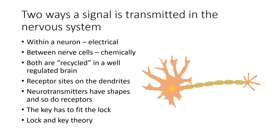To summarize, there are two ways that a signal is transmitted in the nervous system. Within a neuron, it is moved electrically. But between nerve cells, messages are moved chemically. Both are recycled in a well-regulated brain. But there are times that these chemicals — both electrical and neurotransmitters — don't get recycled, and we'll see that is part of the reason that drugs can cause damage to the brain. The receptors sit on the dendrites. The neurotransmitters have shapes and so do the receptors. This is sometimes called the lock and key theory — the key has to fit the lock in order for the chemical to produce the desired or undesired result.